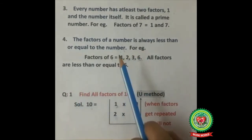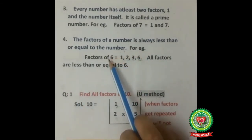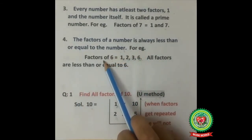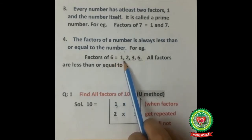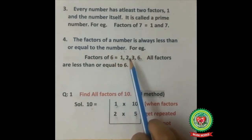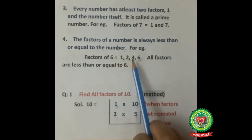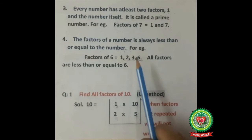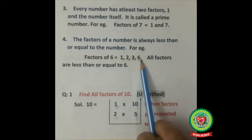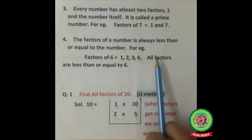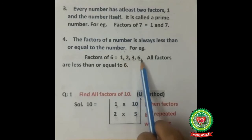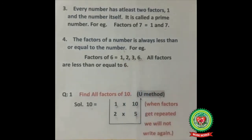For example, the factors of 6 are 1, 2, 3, and 6. All of these factors are less than or equal to 6.